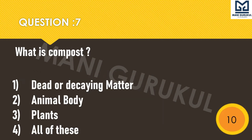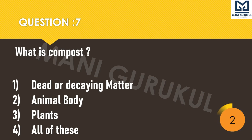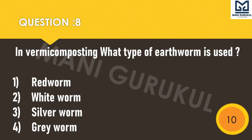Question 7: What is compost? First: dead or decaying matter. Second: animal body. Third: plants or food. Fourth: all of these. Question 8: In vermicomposting, what type of earthworm is used? First: red worm. Second: white worm. Third: silver worm. Fourth: gray worm. Your time starts.